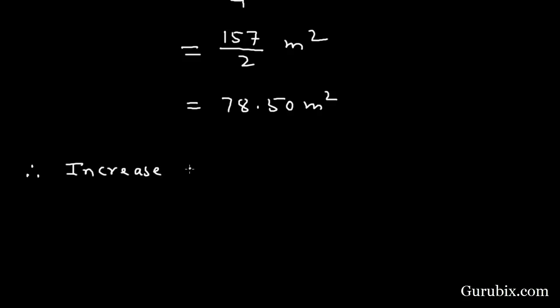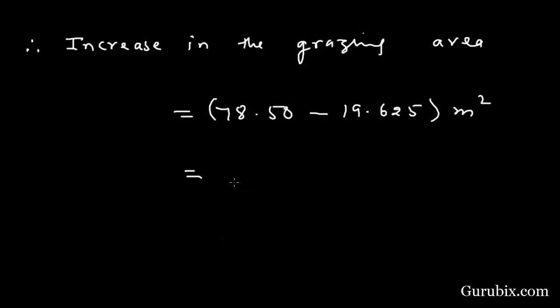Therefore, increase in the grazing area will be 78.50 minus 19.625 meter square, and this equals 58.875 meter square.